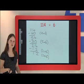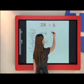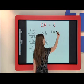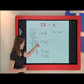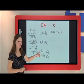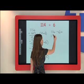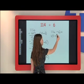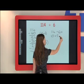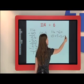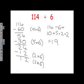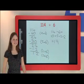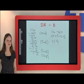Now we can work out the answer. 114 divided by 6 equals 10 plus 5 plus 2 plus 2, which equals 19. So 114 divided by 6 equals 19. Thank you for watching.